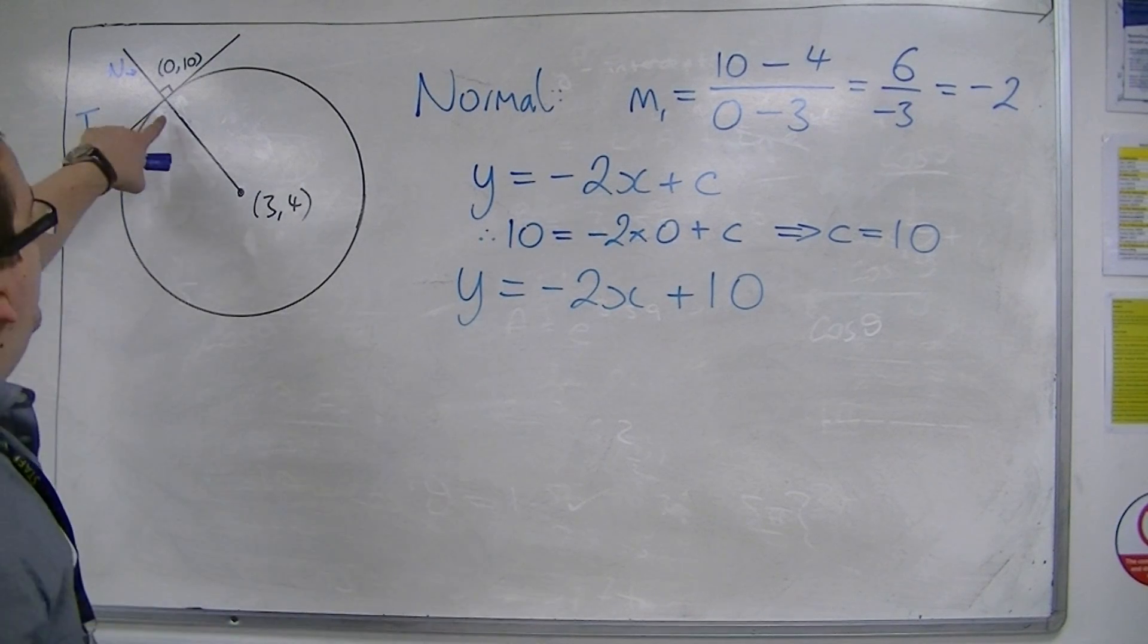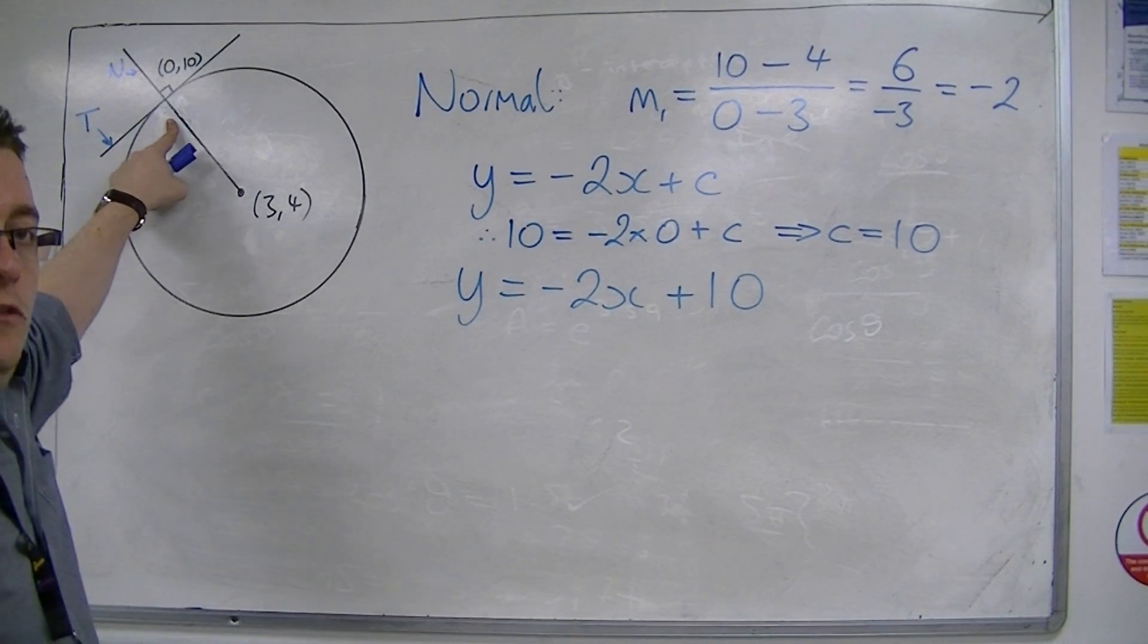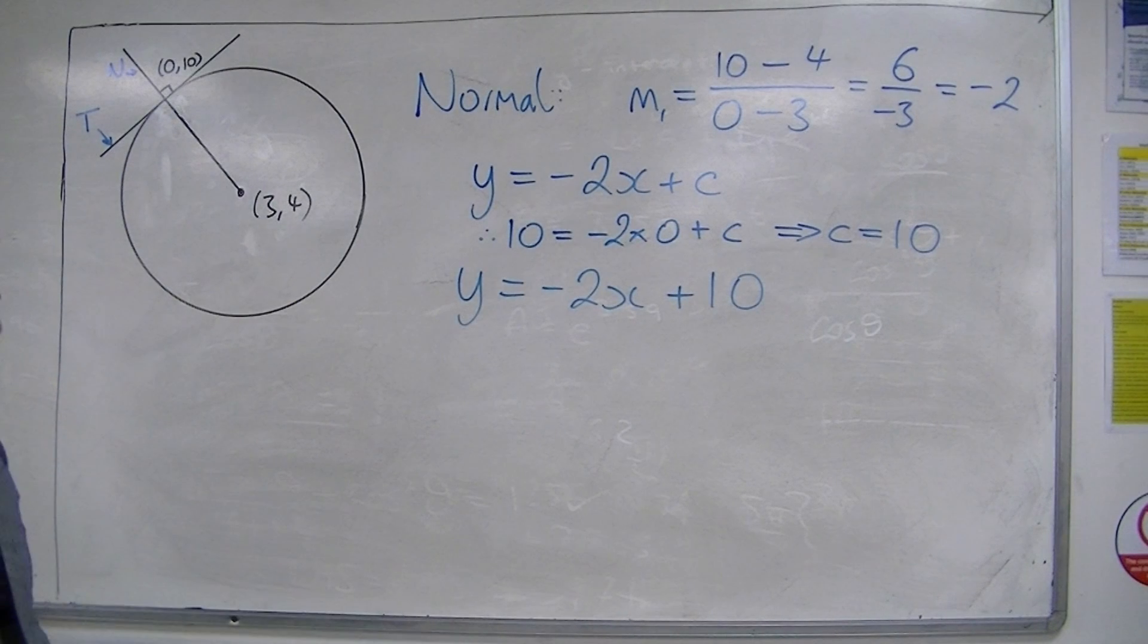And you should be able to spot that anyway, because (0, 10) is on the y-axis. And that's why it's crossing the y-axis. So, that's the equation of the normal.